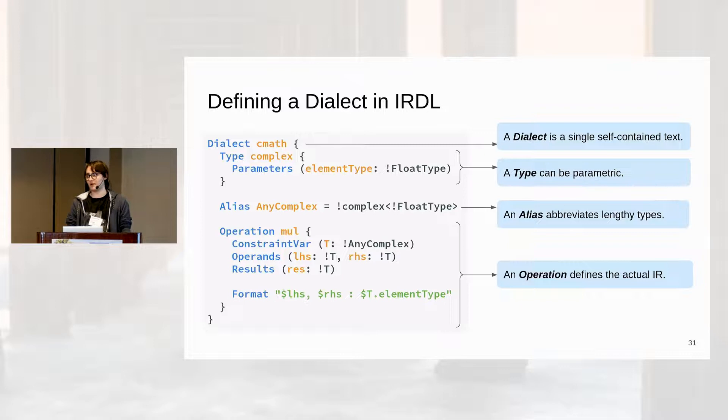So essentially, if you multiply two complex of F32, they should give you a result of complex F32. Same if you had a complex F64, it should be F64. And you cannot combine those, you cannot have multiplication between a complex F32 and a complex F64.